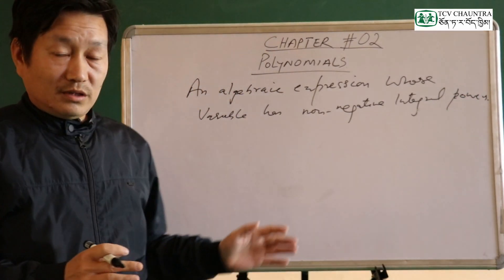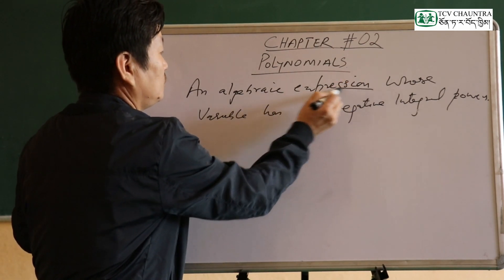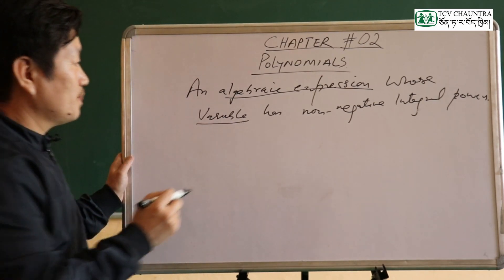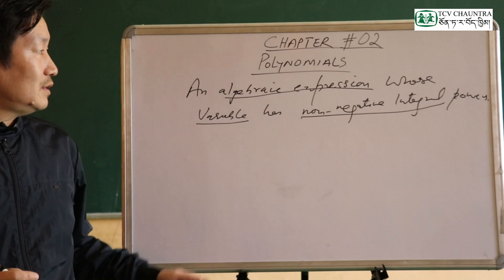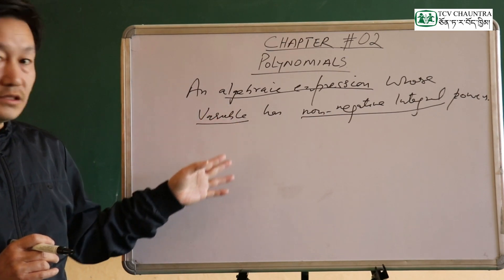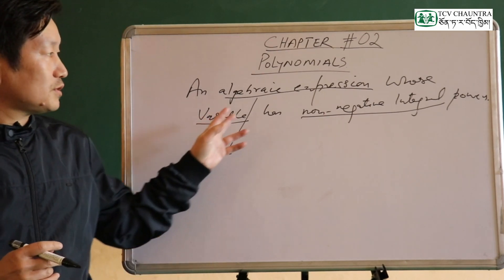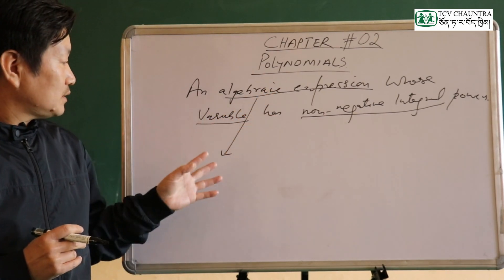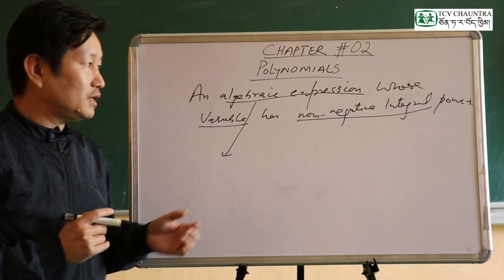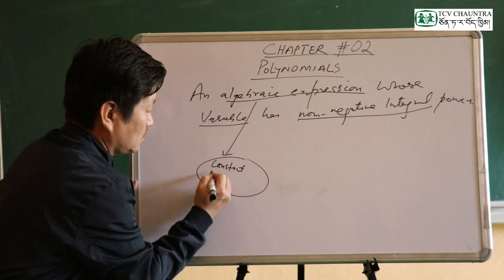There is a formal definition of the polynomial. If you look at algebraic expressions, they involve variables with non-negative integrals. An algebraic expression is a combination of constants and variables.